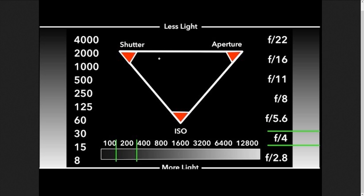I want to make this perfectly clear — this will not be a scientific explanation. If you do not know what shutter, aperture, or ISO is, I will leave links below that can further explain it to you. This is for those who have an understanding of what these three settings do to their camera when they're altered. So I'm just going to jump straight into everything.